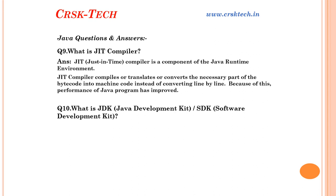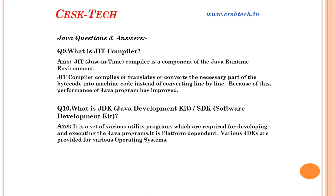Question number ten: What is JDK or SDK? Both are the same. JDK stands for Java Development Kit; SDK stands for Software Development Kit. JDK is a Java software, or we can say it is a set of various utility programs required for developing and executing Java applications. Without JDK, we cannot develop or execute Java applications. JDK is platform dependent because we have a separate JDK for each OS — Windows, Linux, and Mac OS each have their own JDK.